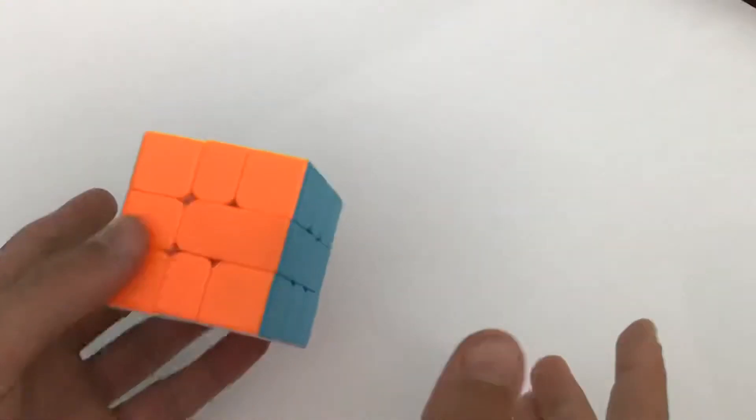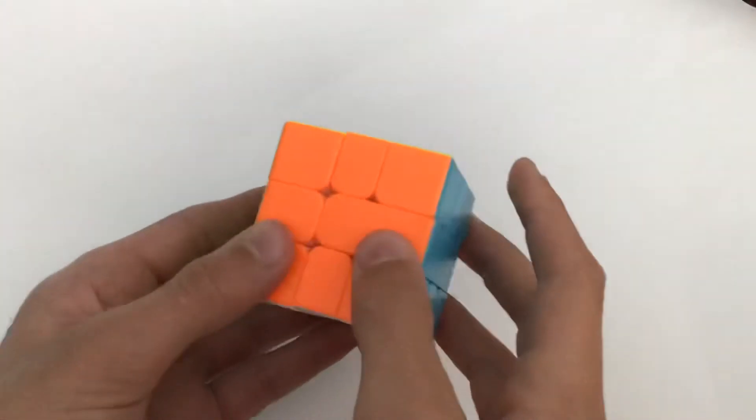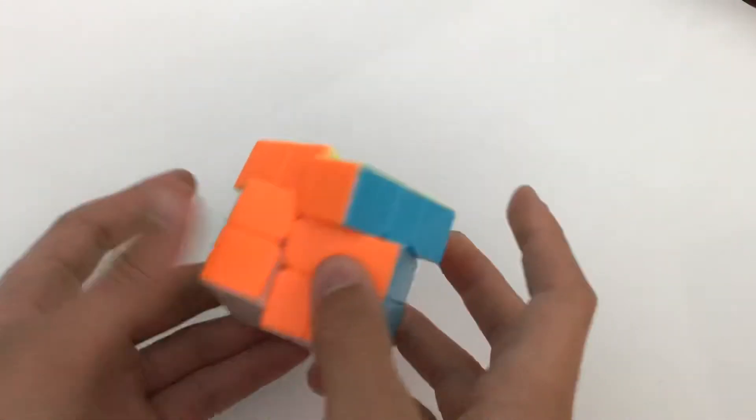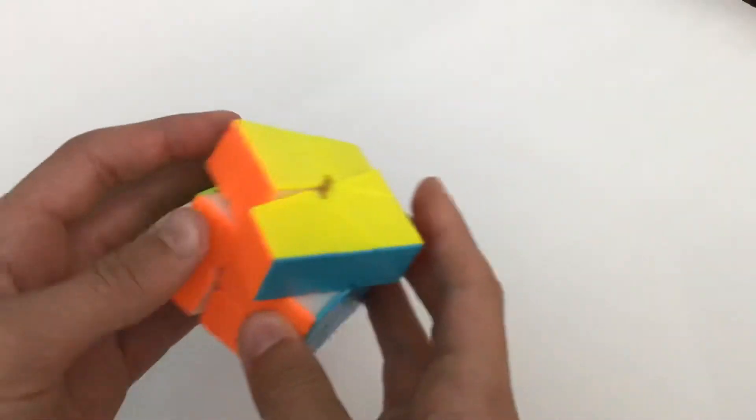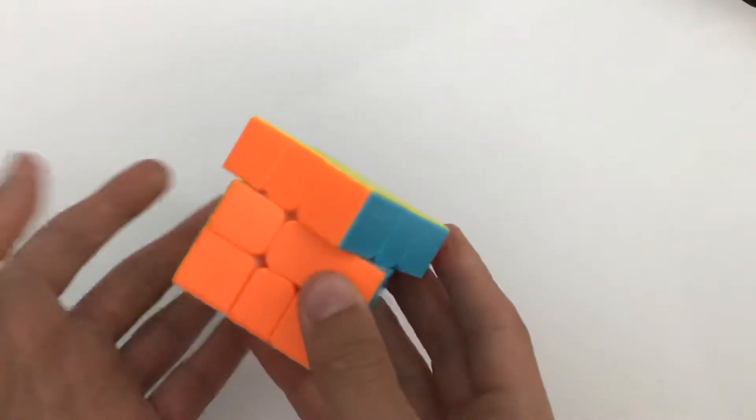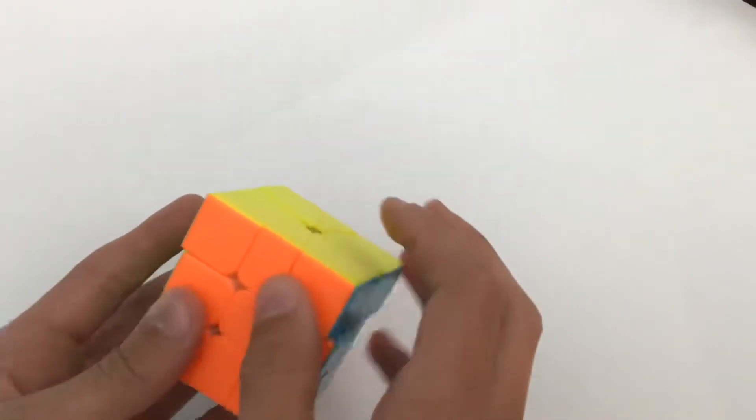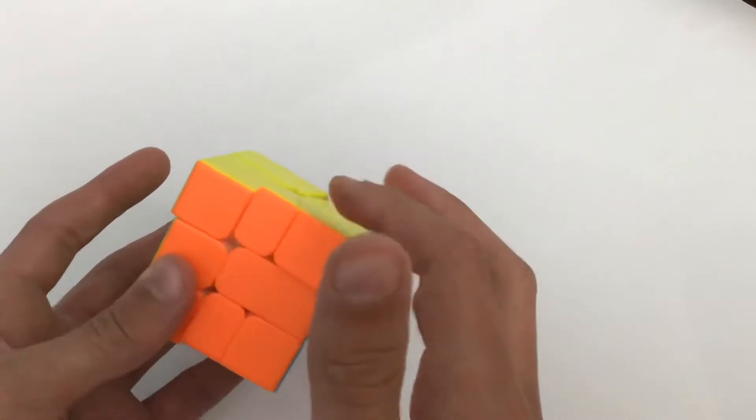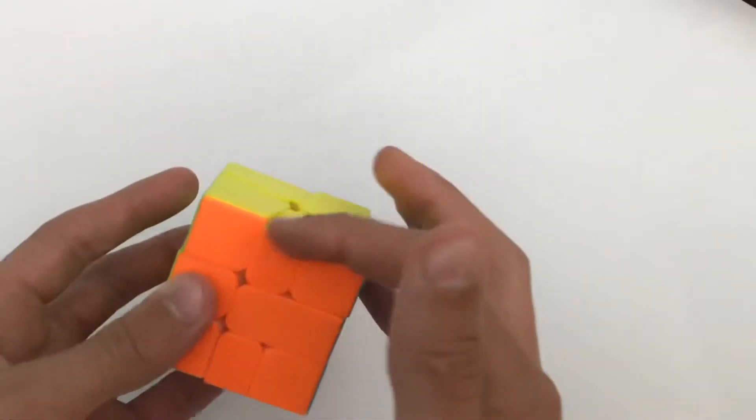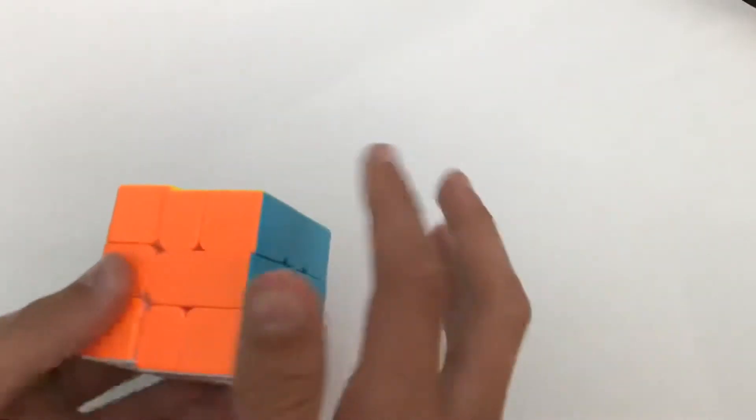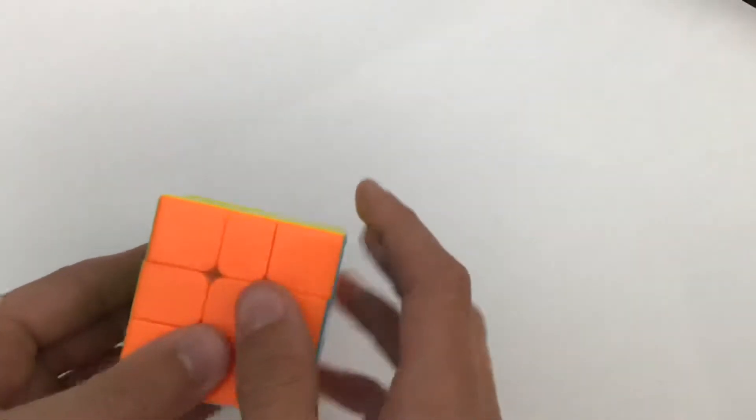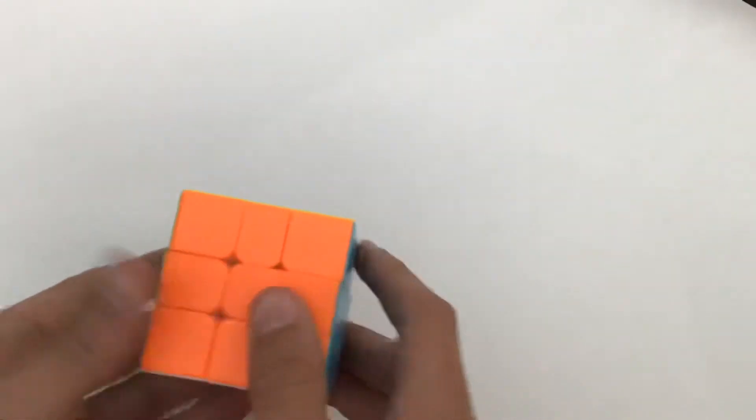Now on other cubes like 4x4, 5x5 plus cubes, there is parity which is when either one edge is flipped or two edges are across from each other that need to be swapped, or when one edge isn't solved so you just need to do a parity algorithm to flip some of the inner edges in that edge.